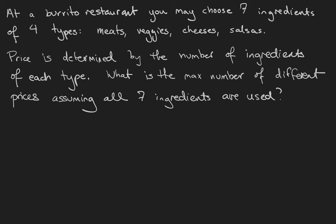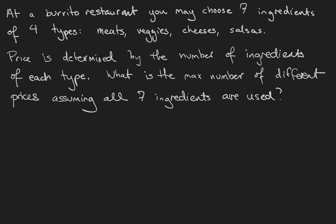So remember, the order of the ingredients doesn't matter, which ingredients doesn't matter. All that matters is the number of ingredients of each type or the distribution of the types of ingredients. So recall, we have seven ingredients and four types.